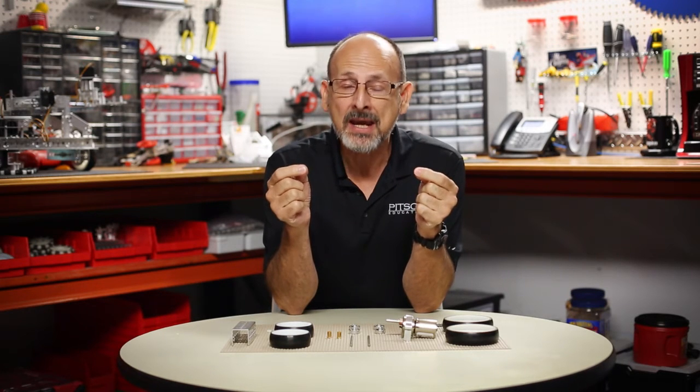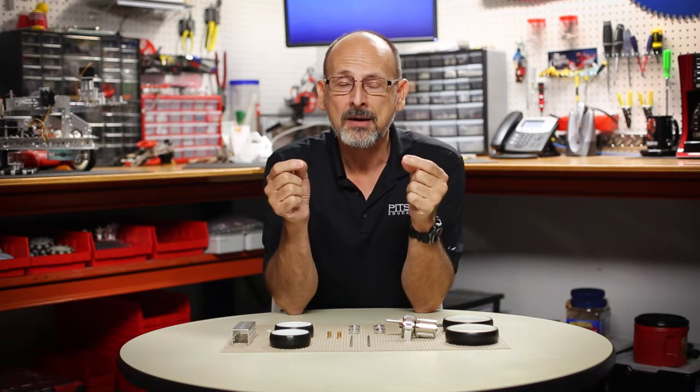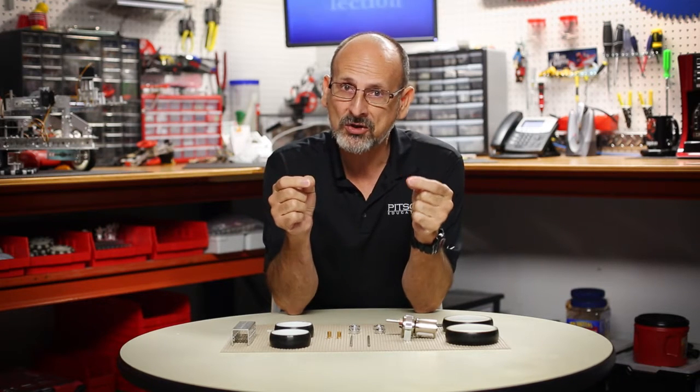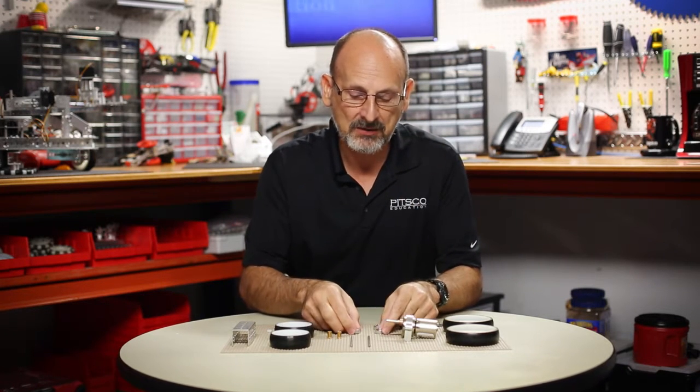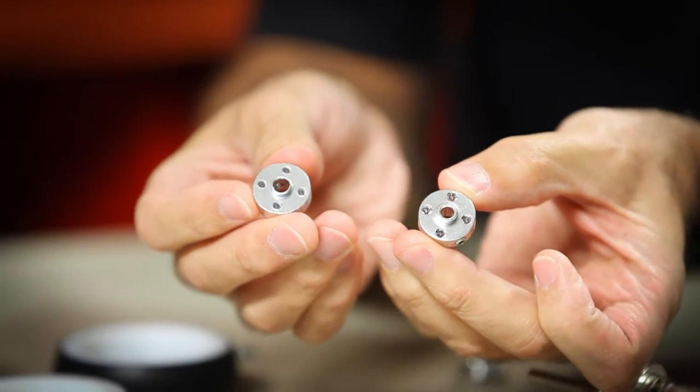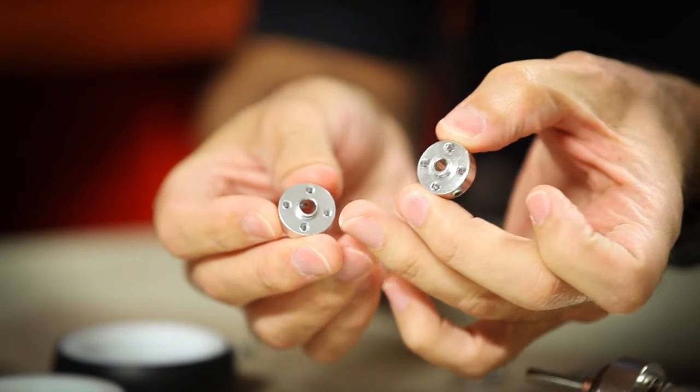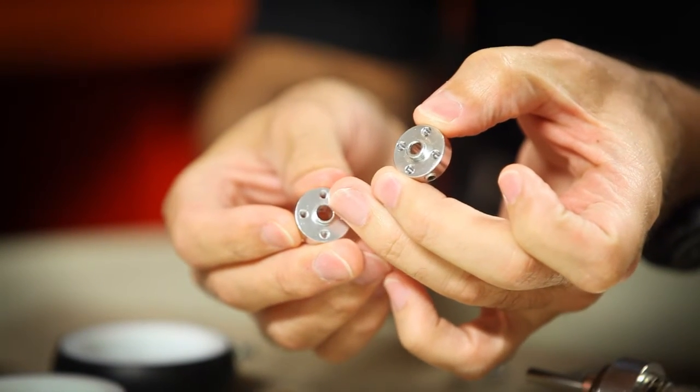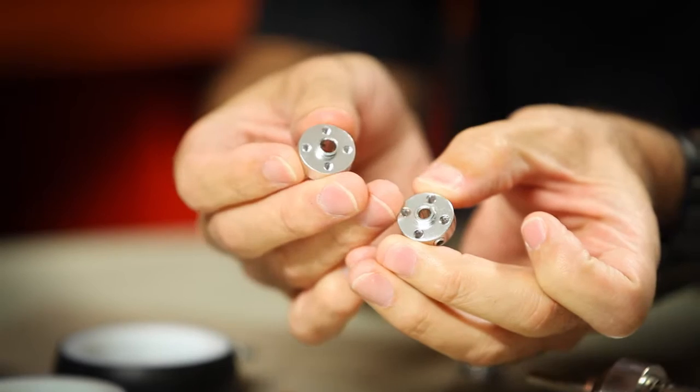The first thing we probably want to point out is there can be some confusion between the Tetrix axle hub and the motor shaft hub. They look very similar, and I'm going to show these to you. They look very close. The only difference between the two is the inside diameter or the size of that center hole.